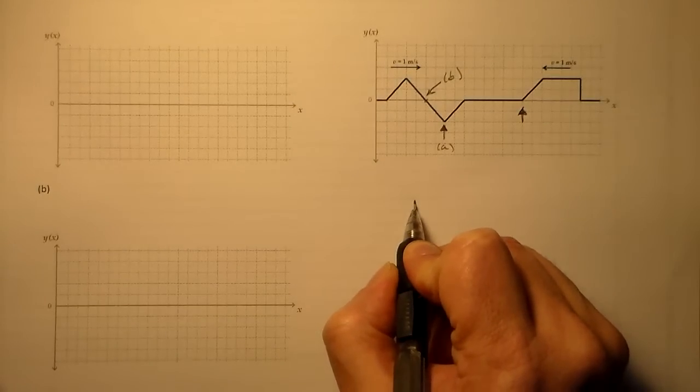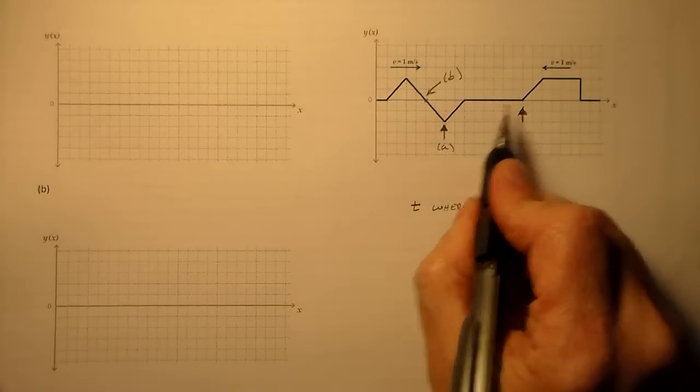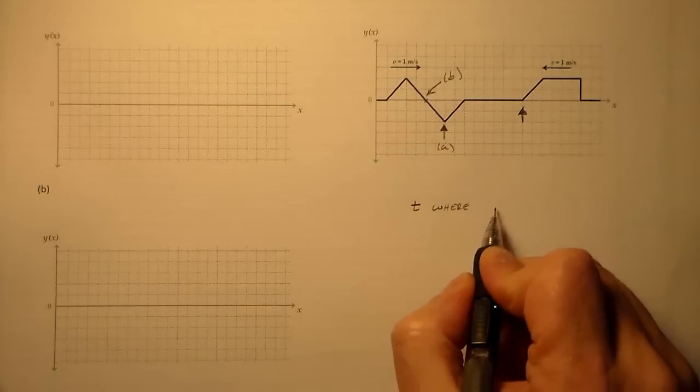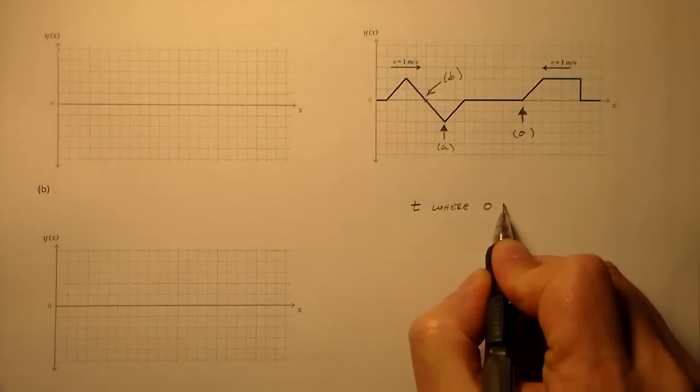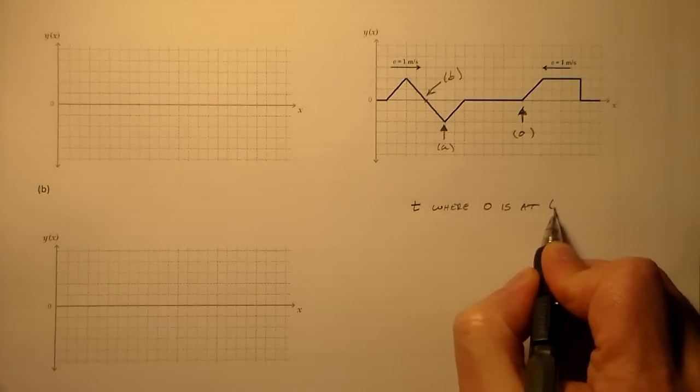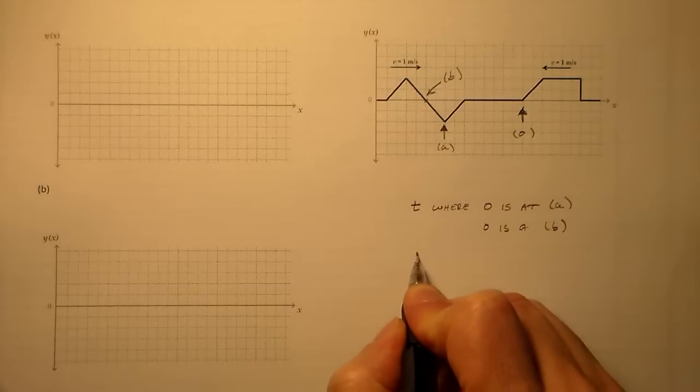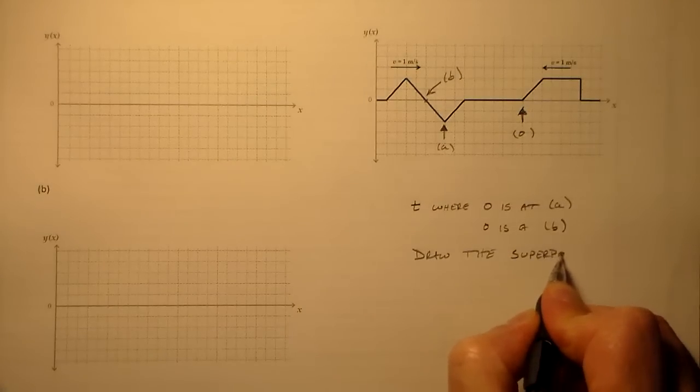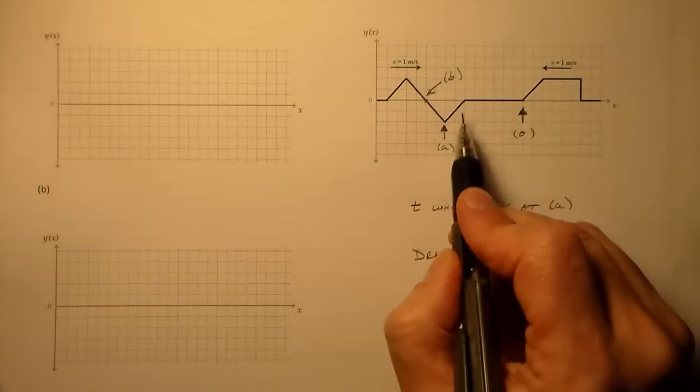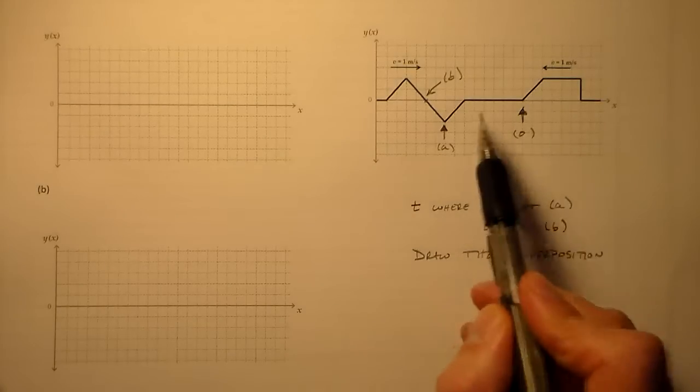What we'd like to find for each one of these is the time T where this point here is at this point here. So let's, I've got to call that A and B. Let's call this zero. Where zero is at A. Or where zero is at B.